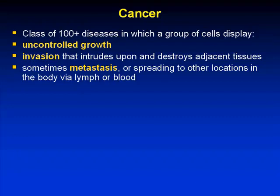We tend to use it very much as a single term, but to remind ourselves that this is a class of over 100 different diseases, although they share a very common set of sequelae — that is, uncontrolled growth, invasion that can intrude upon and destroy adjacent tissues, and in some cases result in metastasis or spreading to other locations in the body via various circulatory systems.